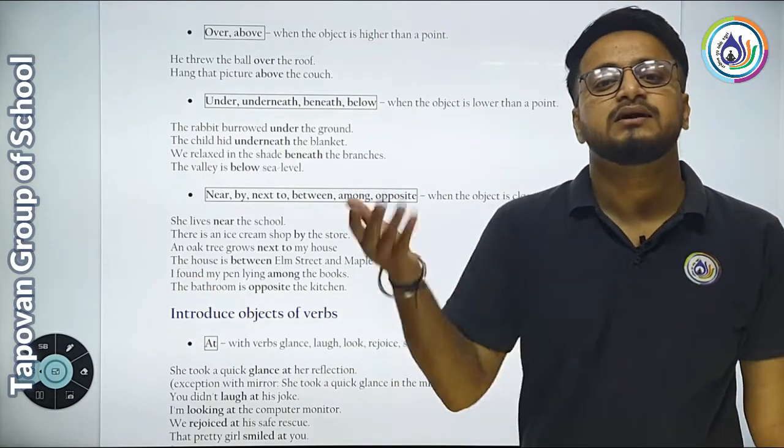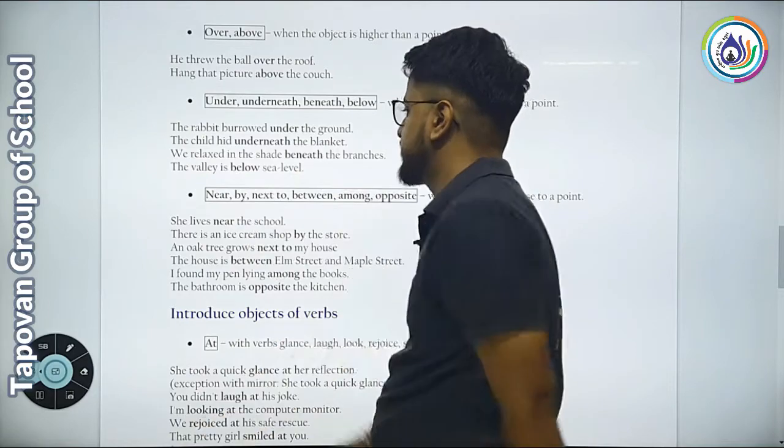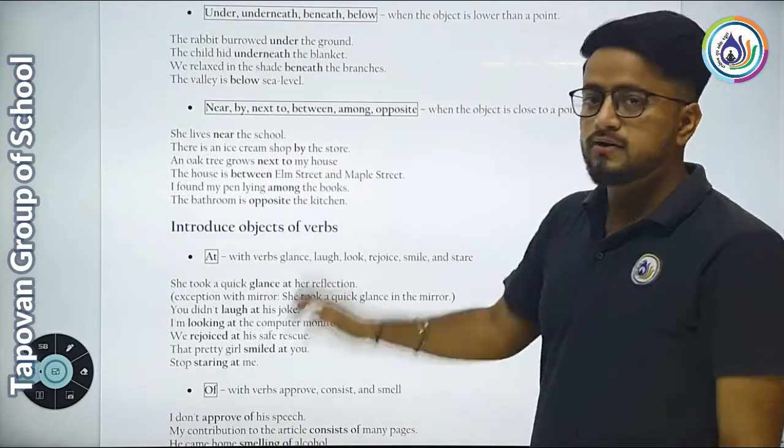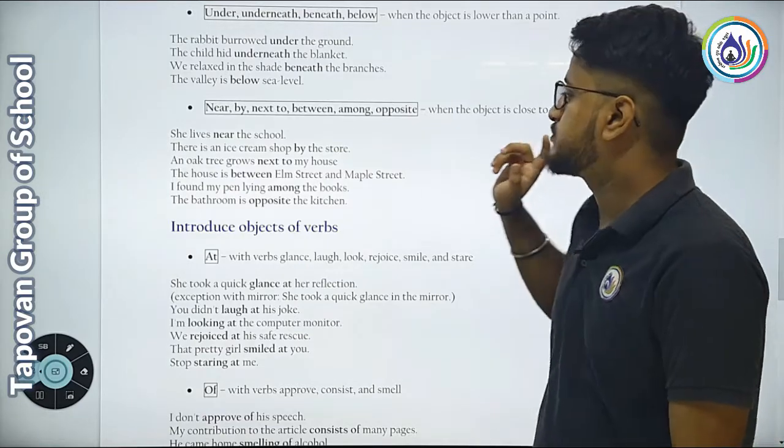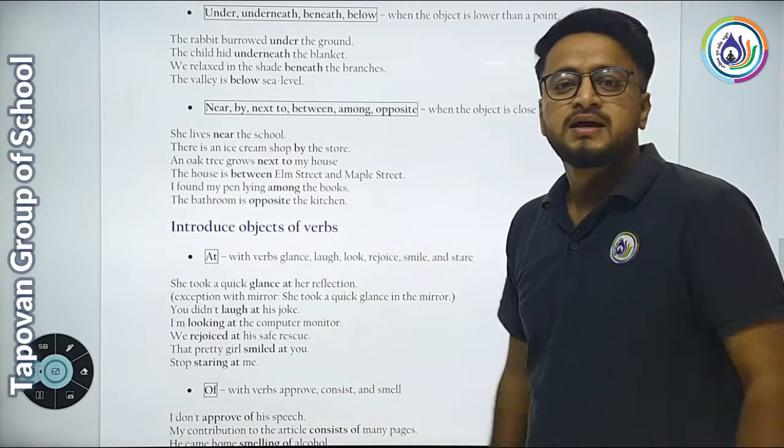We relax in the shade beneath the branches. The well is below sea level. When the object is close to a point, use nearby, next to, between, among, or opposite.